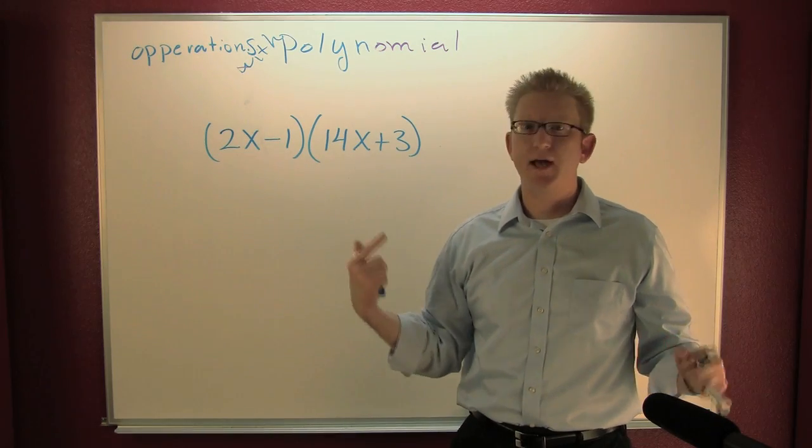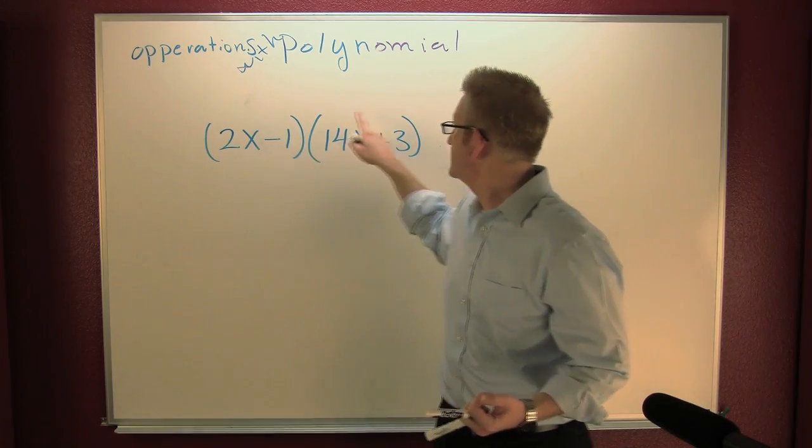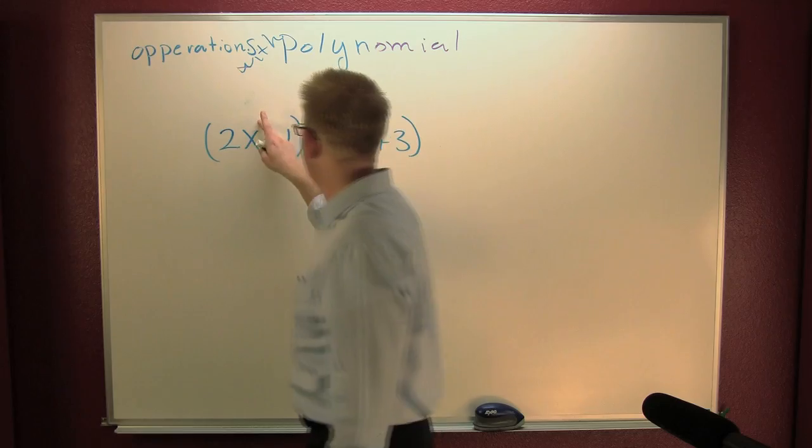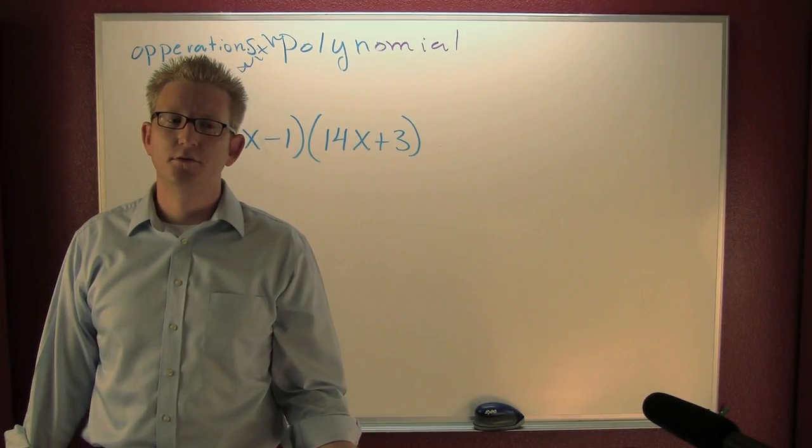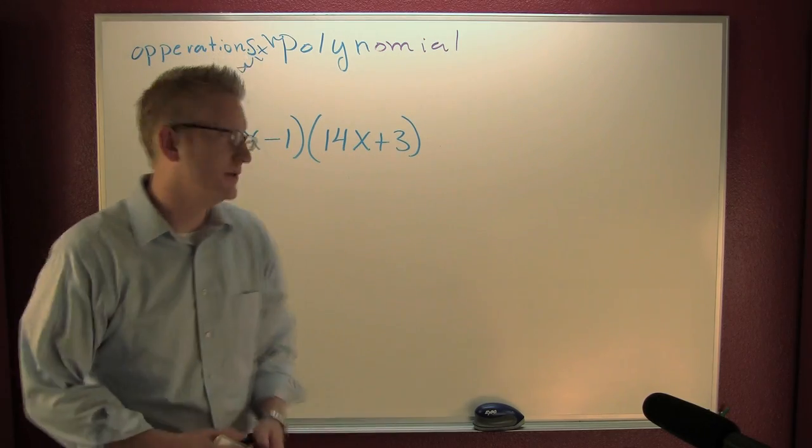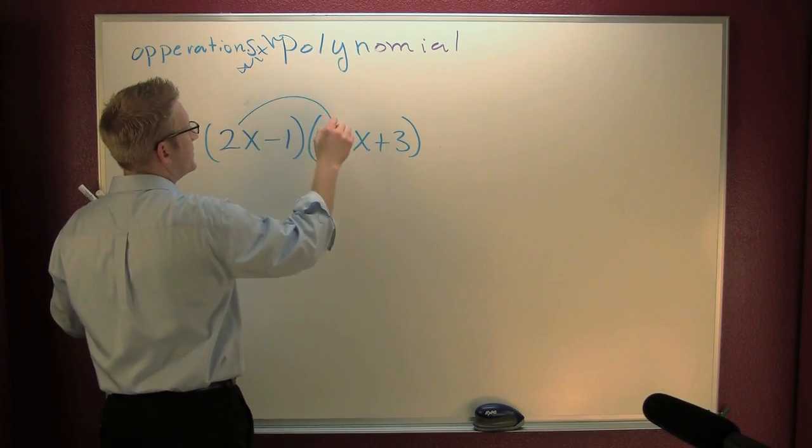Algebraic expressions - we just happen to be calling them polynomials. Why? Because they have whole numbers as exponents. All right, fine. FOIL - foiled again! You know, First, Outer, Inner, Last. The first round.